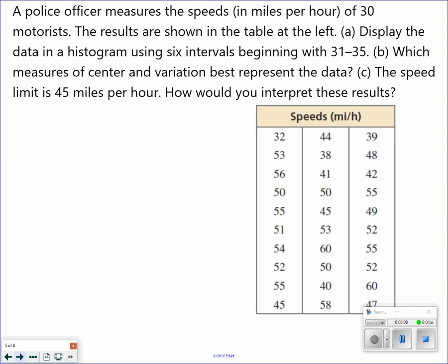The police officer measures the speeds in miles per hour of 30 motorists. The results are shown in the table. Display the data in a histogram using six intervals beginning from 31 to 35. I have to basically come up with the rest of the intervals. Each time it should have a difference of four. The next interval is 36 to 40. Notice it still has a difference of four.